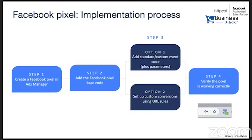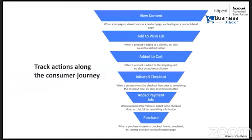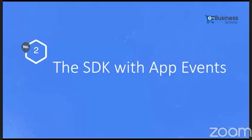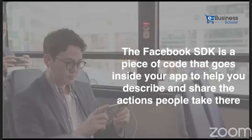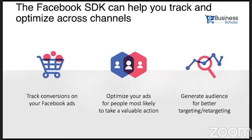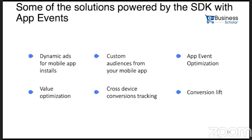Track actions along the customer journey — from landing on the site to viewing a product, adding to cart, checkout, adding payment information, and finally purchase — a full funnel. Pixel for website and SDK for app are similar: both track conversions on your Facebook ads, optimize ads for people most likely to take valuable actions, generate audiences for better targeting and retargeting.